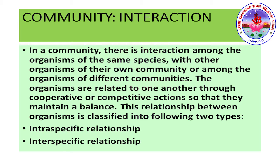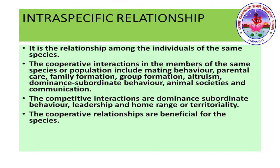Based on interaction, community relationships are of two types: intraspecific and interspecific. Intraspecific is the relationship among individuals of the same species. Cooperative interactions among members of the same species or population include mating behavior, parental care, family formation, group formation, altruism, dominance-subordinate behavior, animal societies, and communication. Competitive interactions include dominance-subordinate behavior, leadership, and home range or territory. Cooperative relationships are beneficial for the same species.